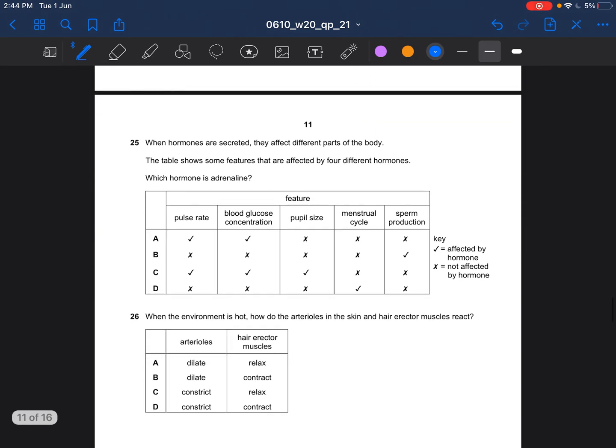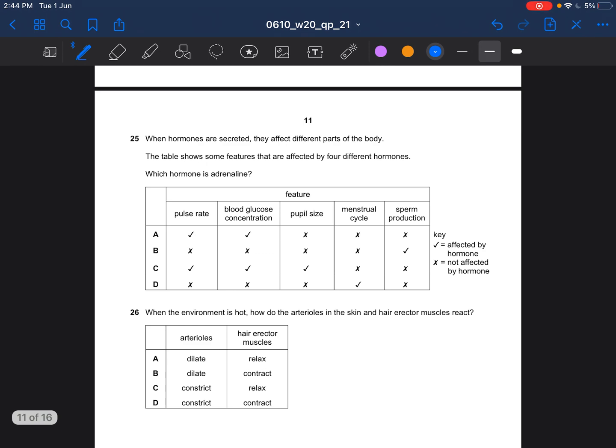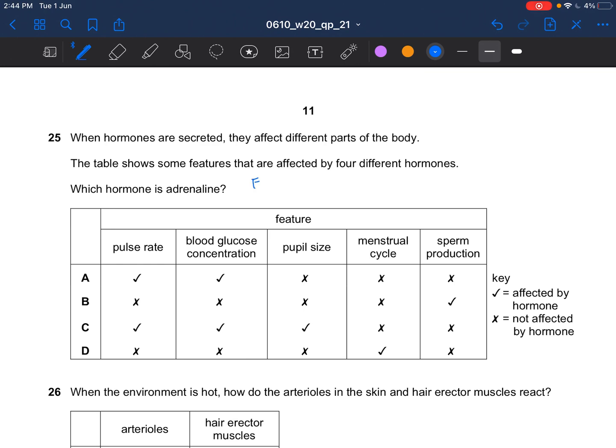Next question. When hormones are secreted they affect different parts of the body. The table shows some features that are affected by four different hormones. Which hormone is adrenaline? Adrenaline is known to trigger fight or flight. So adrenaline would increase the pulse rate, increase blood glucose concentration, increase your pupil size. It doesn't affect menstrual cycle, doesn't affect sperm production. So the answer would be C.